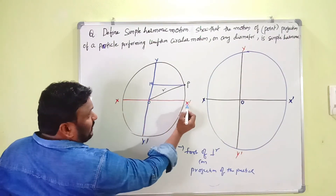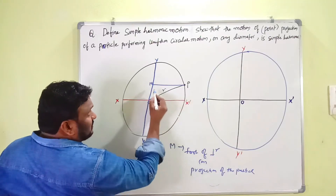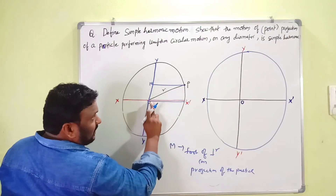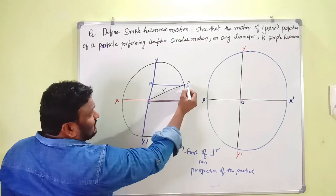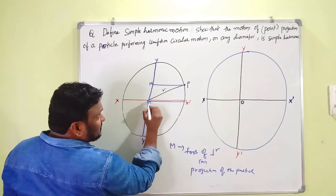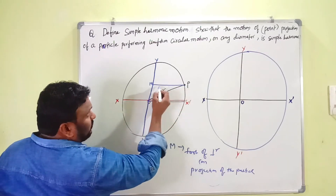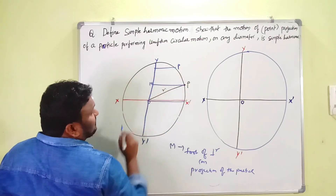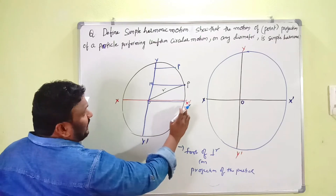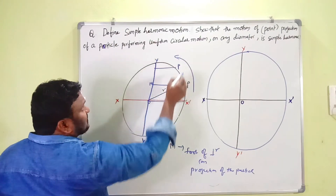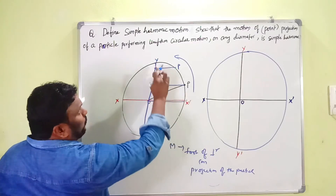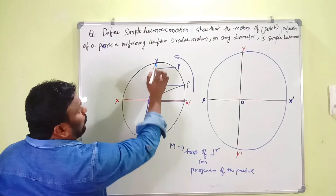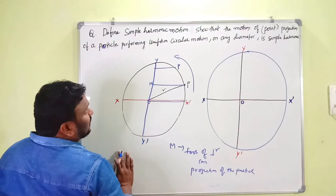We draw a normal M from particle P onto the diameter YOY' — this is the foot of the perpendicular, also called the projection of the particle. Initially when the particle is at position X', M is at the origin O. As the particle moves, M moves along the diameter. When the particle moves from X' to Y, the normal M moves from O to Y.